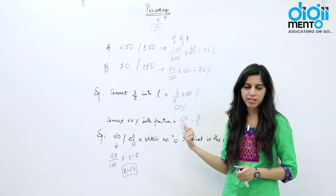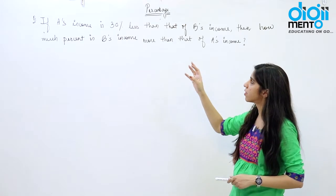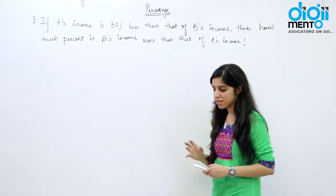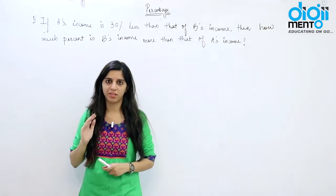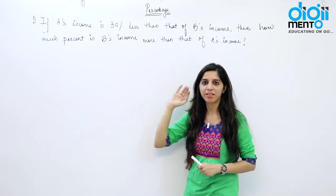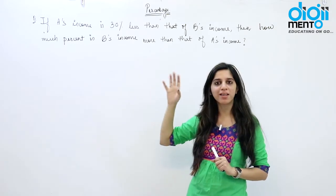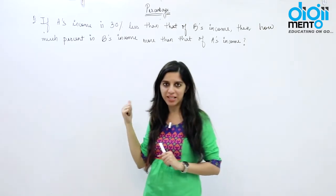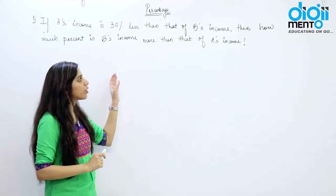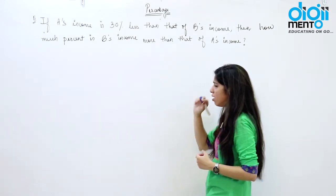Now look at the first model. The question is: if A's income is 30 percent less than B's income, then how much percent is B's income more than A's? The answer is NOT 30. If I had said A's income is 30 rupees less than B then how much more is B than A, the answer would be 30 rupees. But we are talking in terms of percentages, not absolute terms.